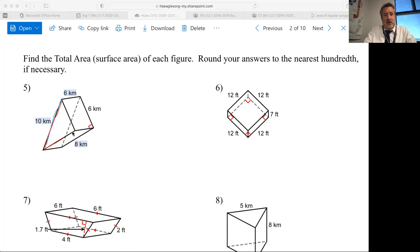And for total area of a prism, total area is equal to the lateral area. Remember the lateral area is the perimeter times the height plus two base areas.